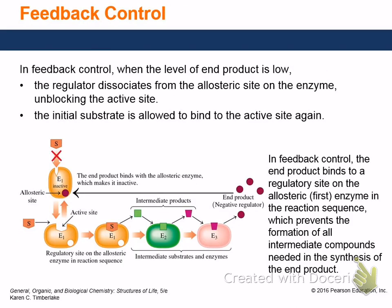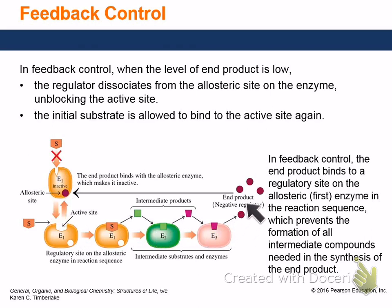The textbook shows it with a whole series of reactions: substrate produces a product through a bunch of enzymes, you get a negative regulator, and it comes back to the first enzyme and stops the reaction. I like my simple picture better.